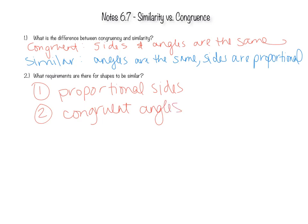If you are confused on what proportional sides means, if I have a triangle with a side that's 2 and a side that's 4, proportional would be this side is 4 and this side is 8. So I can multiply 2 by 2 to get 4 and 4 by 2 to get 8. So they are proportional.